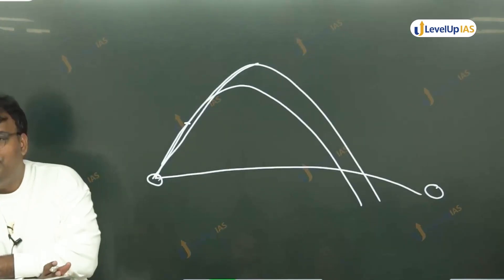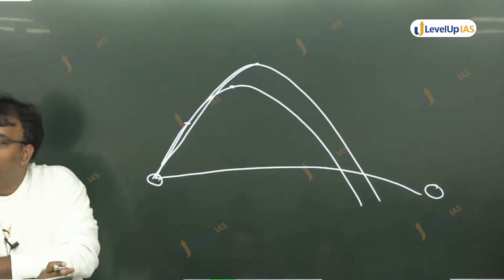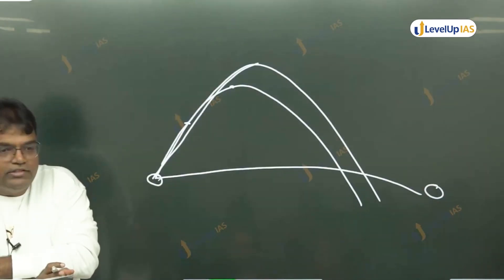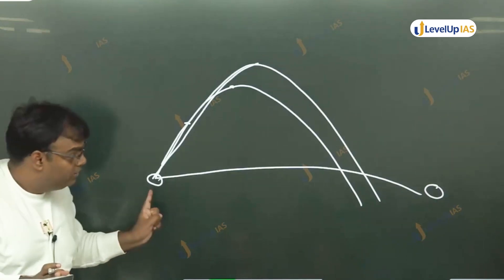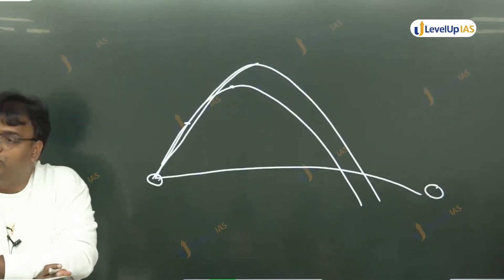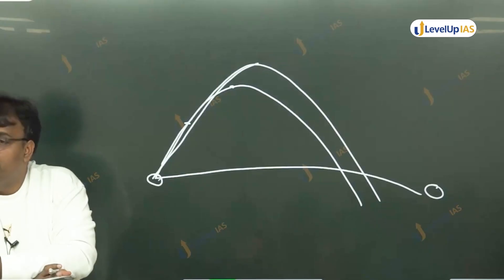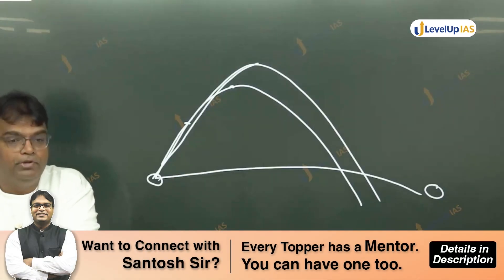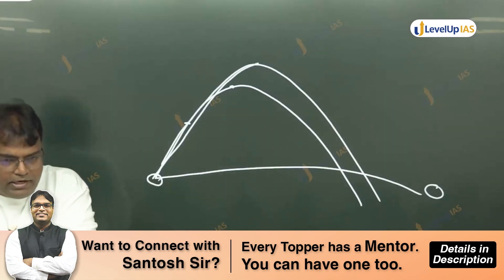Is it easy to determine where a ballistic missile is going to fall? Yes! If we detect a ballistic missile at a particular speed and angle, using physics we can determine where it is actually going to land. Ballistic missiles can be categorized on the basis of their range — from a very small range of 300 kilometers to a very large range of more than 5,500 kilometers. Those with a range above 5,500 kilometers are called Intercontinental Ballistic Missiles, or ICBMs.